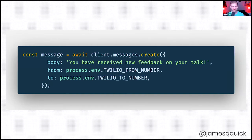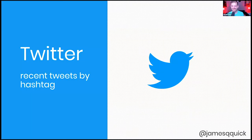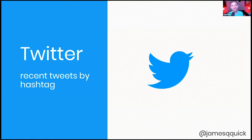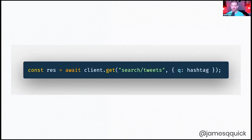Next, to prove how interactive a static site can be, I wanted to show recent tweets by a given hashtag — hint, the hashtag we've already seen. If you participate in this demo, use the hashtag #jqquicktalks and include my handle @jamesqquick, and we'll see those show up in the demo. Twitter has a nice API where you call client.get and specify the hashtag you want to search by.